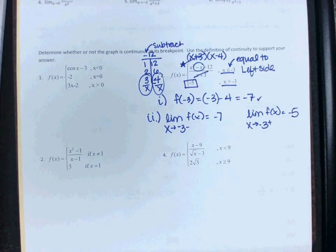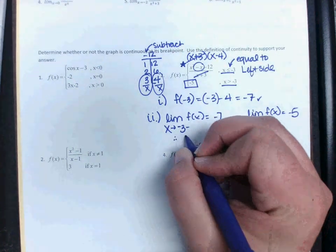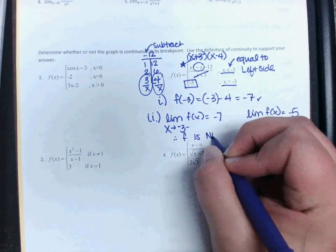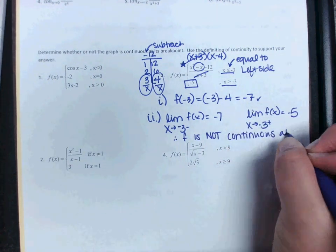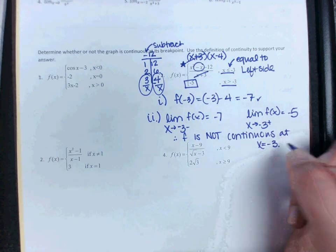Negative 3 from the right. I'm going to use the constant negative 5. And remember, those limits have to be equal. So at that point I can state, therefore, f is not continuous at x equals negative 3.